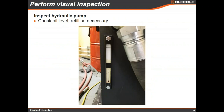Another quick check is to look at the side of the reservoir near the hose connections at the site gauge, which indicates how much oil is in the system. If the oil level is significantly below the middle black line, you may want to add more. Something similar to what's shown in the picture is appropriate and should be good enough.